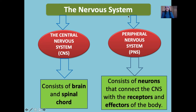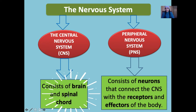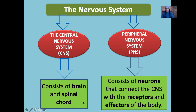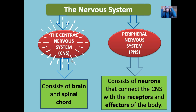Our nervous system can be divided into the CNS, which is the central nervous system, and the PNS, which is the peripheral nervous system. The CNS consists of only two parts: the brain and the spinal cord. Together, the brain and the spinal cord make up our CNS, where all information is being processed.